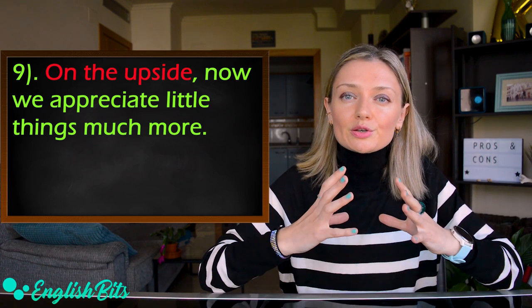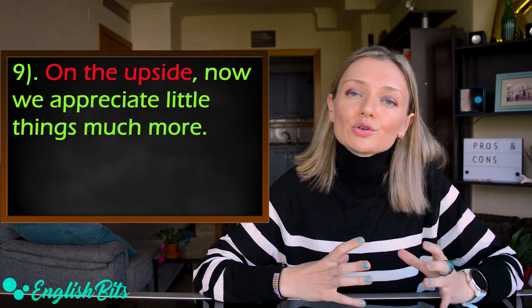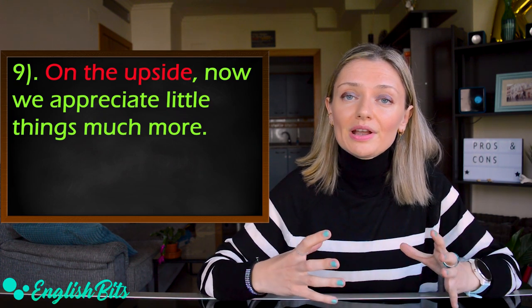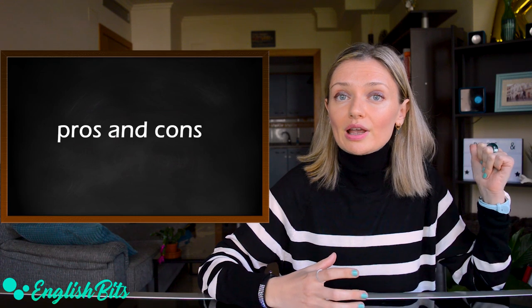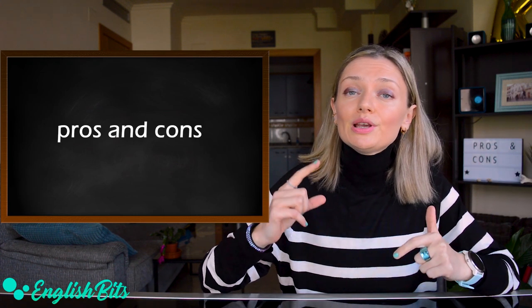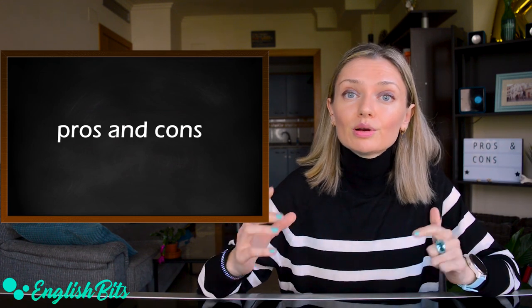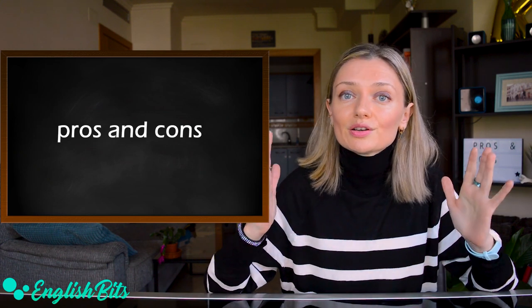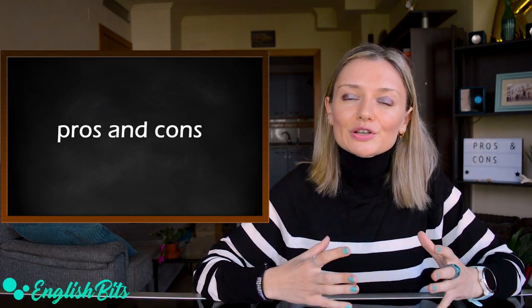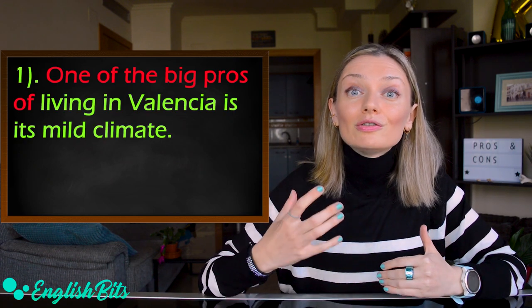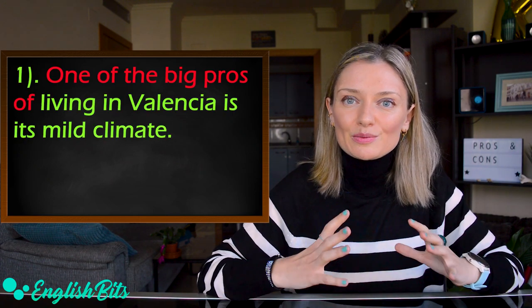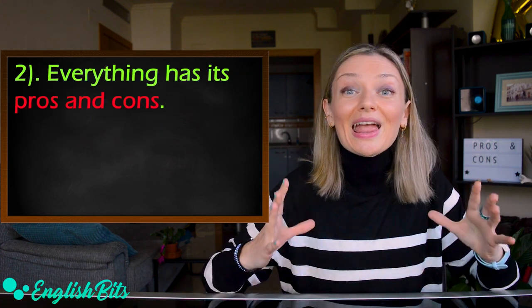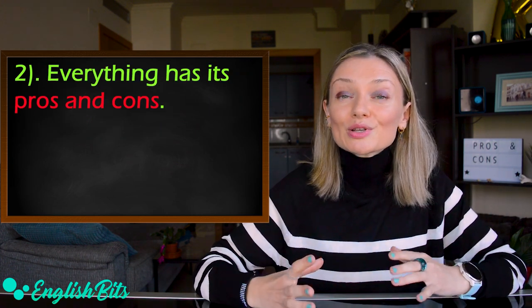And before we finish, another super useful expression that you can use to talk about advantages and disadvantages of something is pros and cons. It has to be used in plural — pros with an S at the end and cons. For example: one of the big pros of living in Valencia is its mild climate. And everything has its pros and cons.